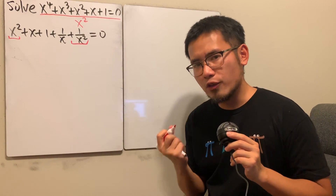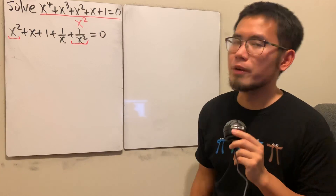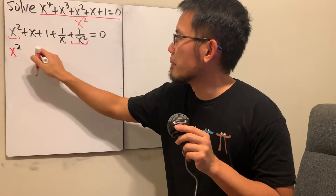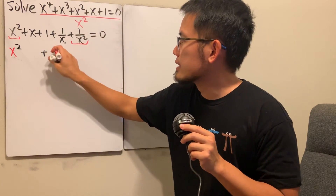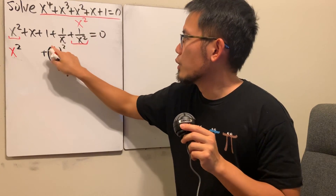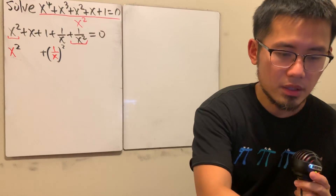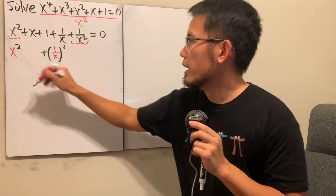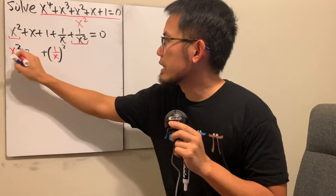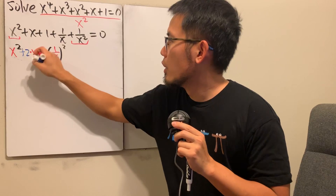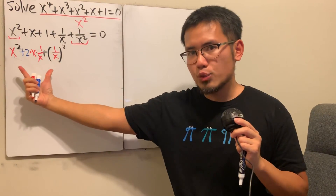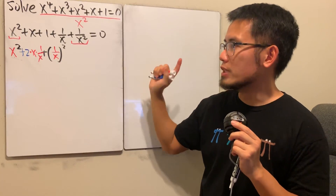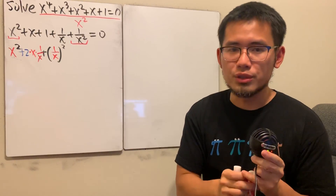We can actually force this to be a very nice term — a perfect square. We have x² and then plus 1/x² already. If we add two times x times (1/x) in the middle, look at that — that's just a perfect square. We added two, so we just have to make sure we subtract that at the end. It's not so bad — you will see.